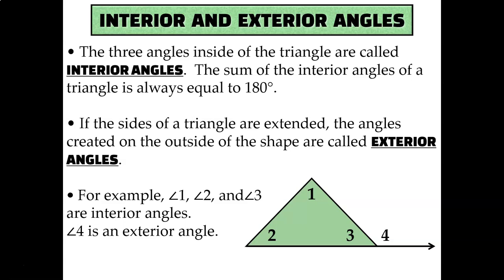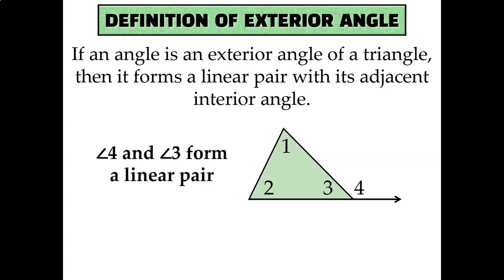But today we're going to be talking about exterior angles which are formed by extending one of the sides of the triangle like what you see for angle 4. By definition, an exterior angle of a triangle forms a linear pair with its adjacent interior angle.